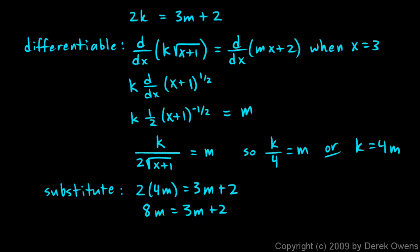Or in other words, 5m equals 2. So m is equal to 2 fifths. And we know that k is equal to 4m. So k is equal to 8 fifths. And those are your answers.